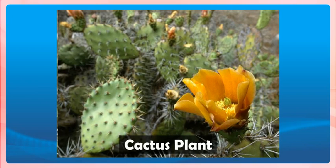Photosynthesis by plant parts other than leaves. Photosynthesis takes place mainly in the leaves of plants. In some plants, however, photosynthesis also takes place in other parts such as green stem and green branches. The green stem and green branches can do photosynthesis because they contain chlorophyll. Those stems and branches which are green in color can do photosynthesis.